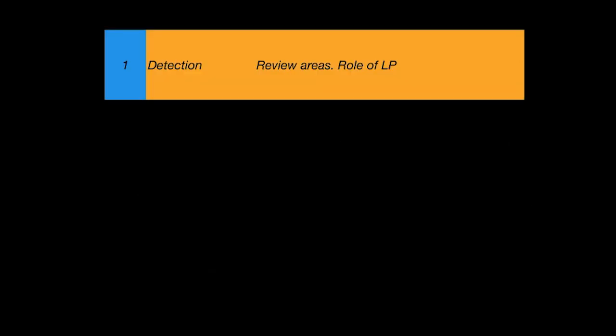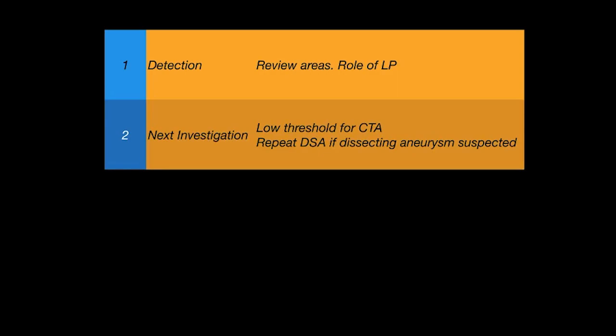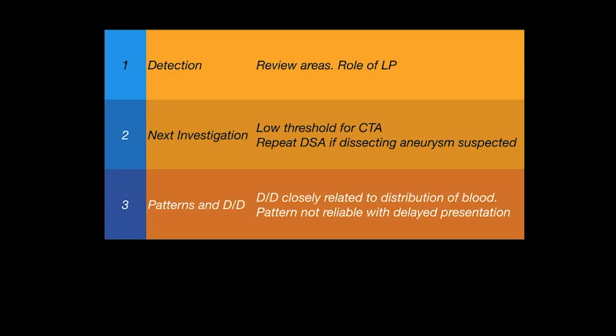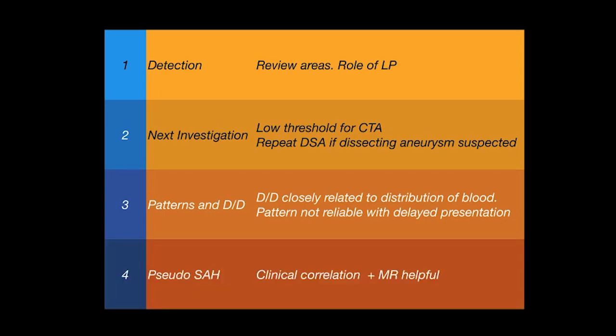In summary: concentrate on review areas before calling a CT negative for SAH to avoid a missed diagnosis. Lumbar puncture has a definite role in delayed presentations. Maintain a low threshold for CT angiogram if blood distribution is atypical. Repeat CT angiogram or DSA if vertebral or PICA dissection is suspected in posterior fossa SAH. Patterns of SAH guide differential diagnosis, but are unreliable in delayed presentations. In pseudo-SAH, use clinical correlation and MRI imaging to clarify. Thank you.